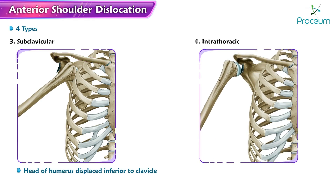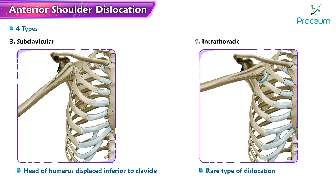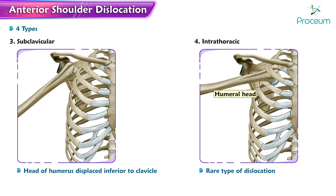Intrathoracic dislocation is a rare type where the humeral head is displaced into the thoracic cavity.